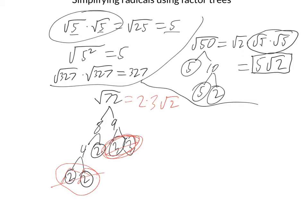Well, I can simplify that a little more. 2 times 3 is 6, so that's 6 times the square root of 2. And that is my final answer.